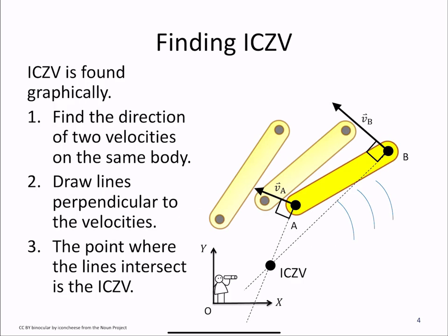The ICZV is found graphically. First, we need the direction of two velocities at points on the same rigid body. We draw lines from those points perpendicular to the velocities. The point where the two lines intersect is the ICZV.